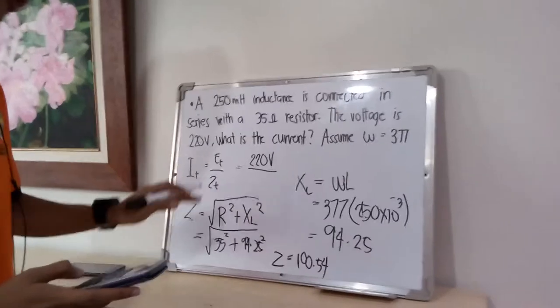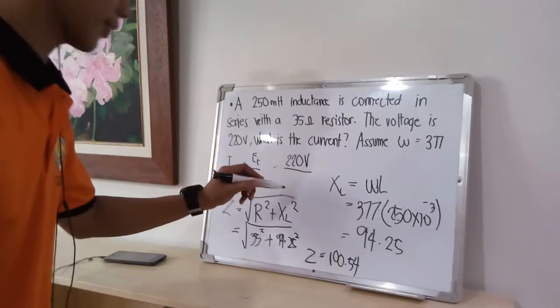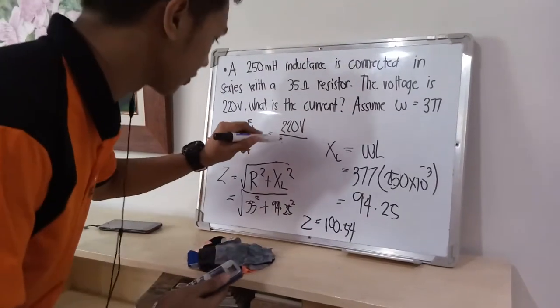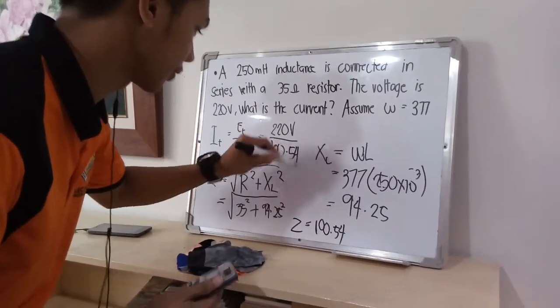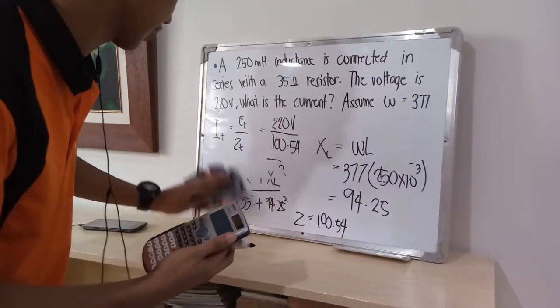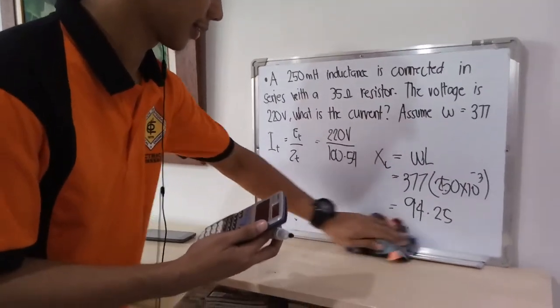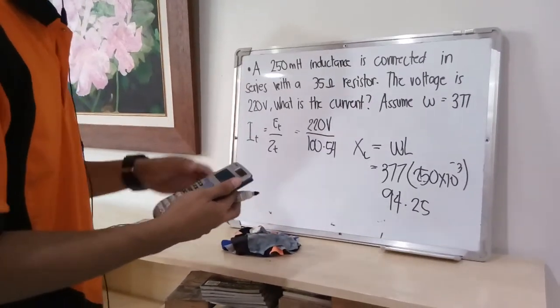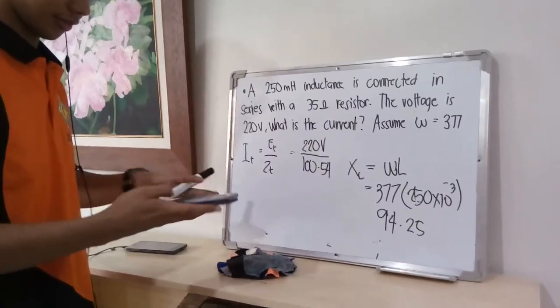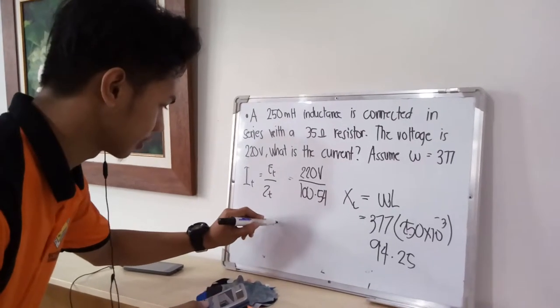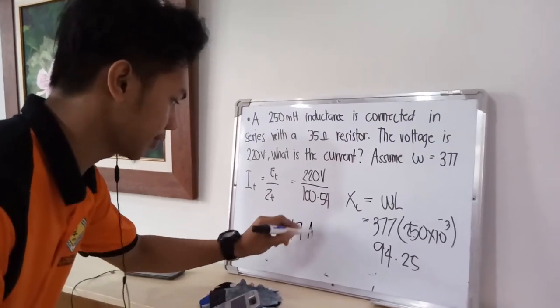Now that we have our impedance of 100.54, we can plug it into the current formula. E sub T is 220 volts over Z sub T of 100.54. The total current is 2.19 amperes.